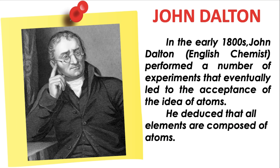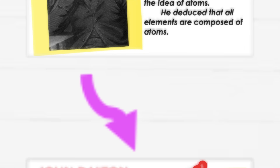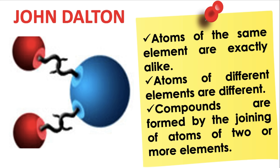Next is John Dalton. In the early 1800s, John Dalton, an English chemist, performed a number of experiments that eventually led to the acceptance of the idea of atoms. He deduced that all elements are composed of atoms. Atoms of the same element are exactly alike, while atoms of different elements are different. Compounds are formed by the joining of atoms of two or more elements. This is John Dalton's atomic model.